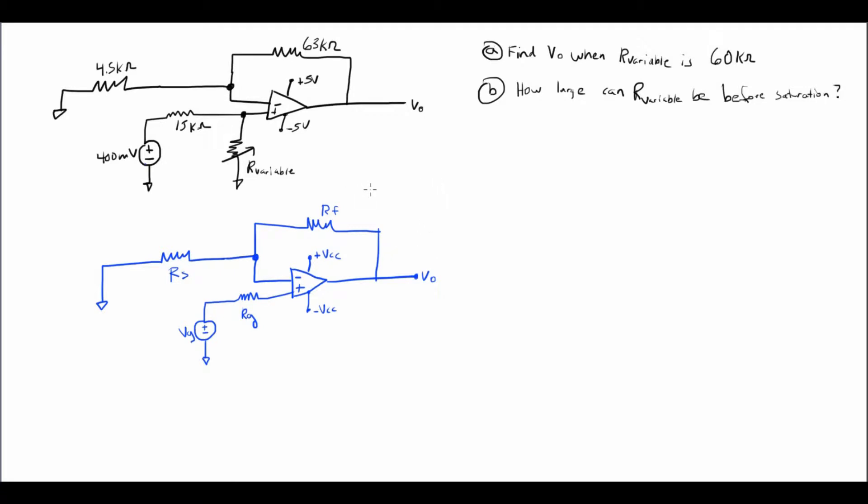Alright, so what I just did is I just drew the standard non-inverting amplifier circuit. The next thing I'm going to do is write out the standard formula. So the output voltage can be represented by the sum of RS plus the feedback resistor over RS times VG. So one thing to note here is VG is the same thing as V positive in this situation.